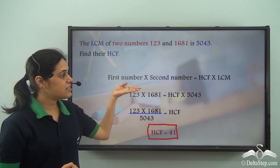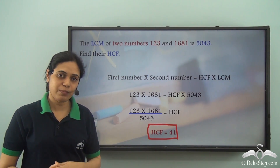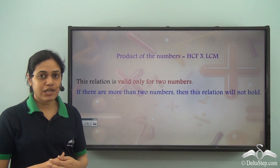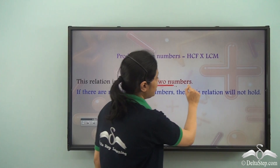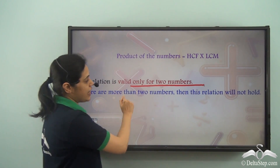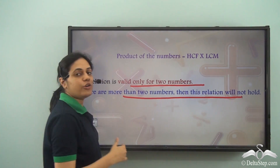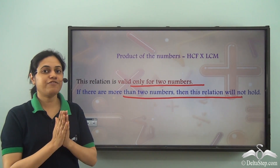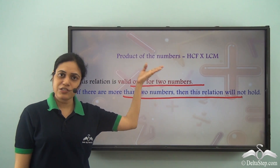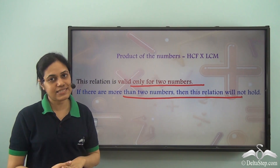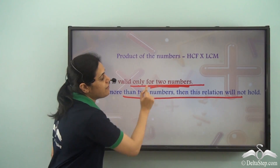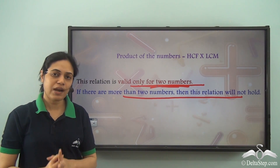This is a very important relation or property and you must always remember it. But this relation is valid only for two numbers. If you have more than two numbers, then this relation will not hold. If you have three or more numbers, the product of the numbers will not be equal to the product of their HCF and LCM. This holds only when we have just two numbers.